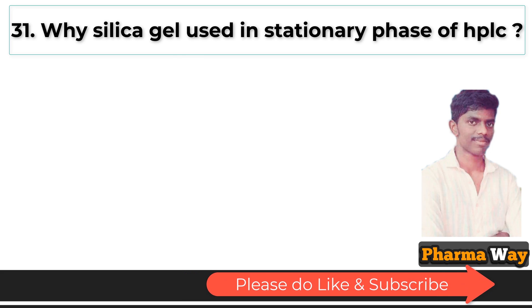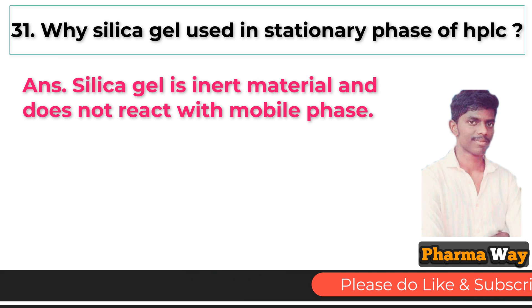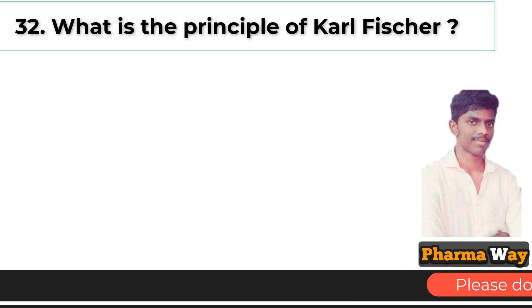Why is silica gel used in the stationary phase of HPLC? Answer: Silica gel is an inert material and does not react with the mobile phase.